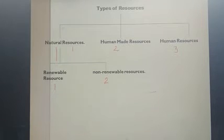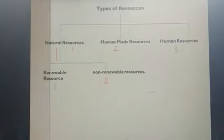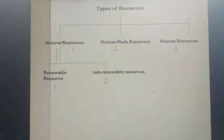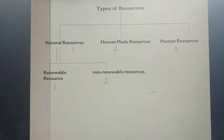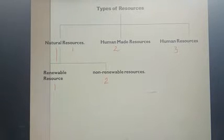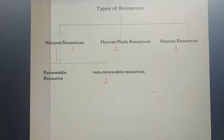This table shows the classification of resources. We are going to study one by one — first, natural resources; then the types of natural resources, renewable and non-renewable; after that, human-made resources; and lastly, human resources. So let's see in detail all of these one by one.